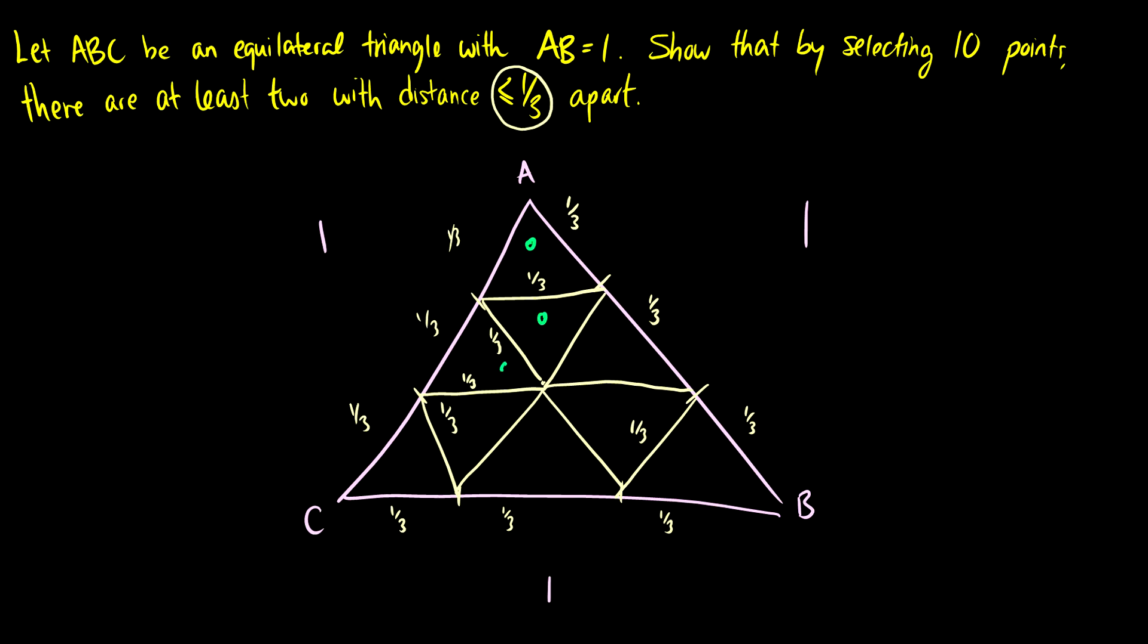So now we have, let's count how many triangles we have. We have one, two, three, four, five, six, seven, eight, nine triangles. And we have 10 points.